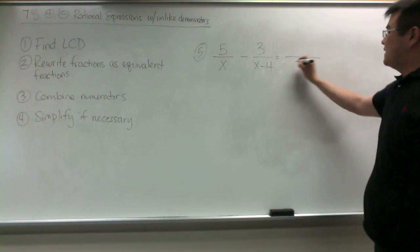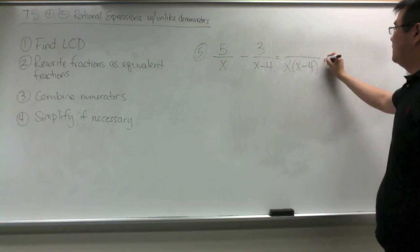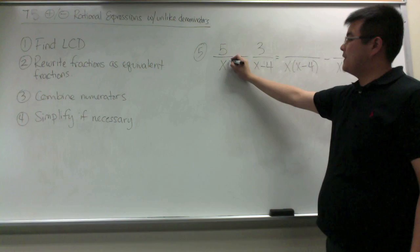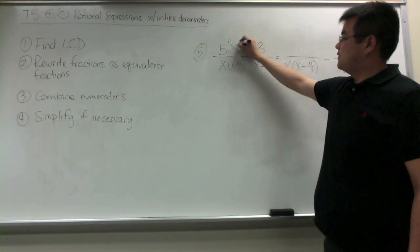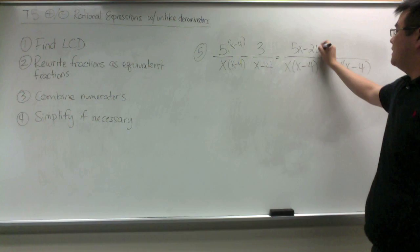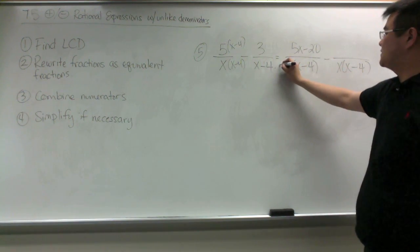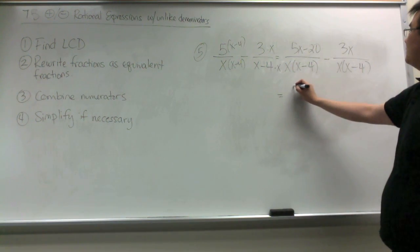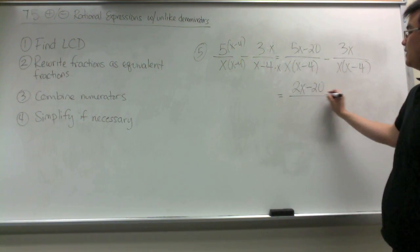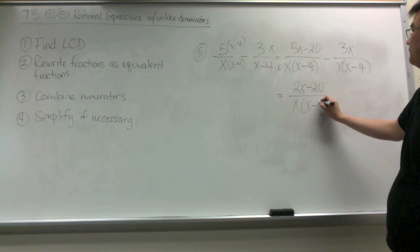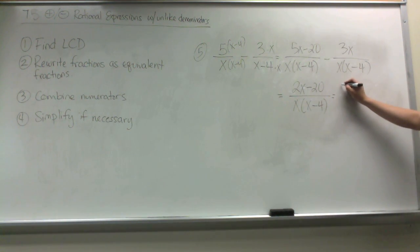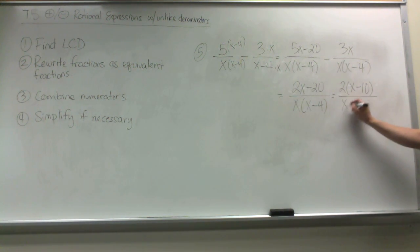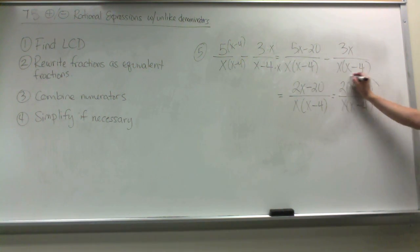In the next example, we're going to write down the LCD: x times (x minus 4). This gets multiplied by (x minus 4), so the numerator gives us 5x minus 20. Then we multiply this fraction by x, and we get 3x. Combining the numerators, we get 2x minus 20 over the common denominator. Then we factor out a 2 and get (x minus 10) over x times (x minus 4). Nothing can simplify, so this is my final answer.